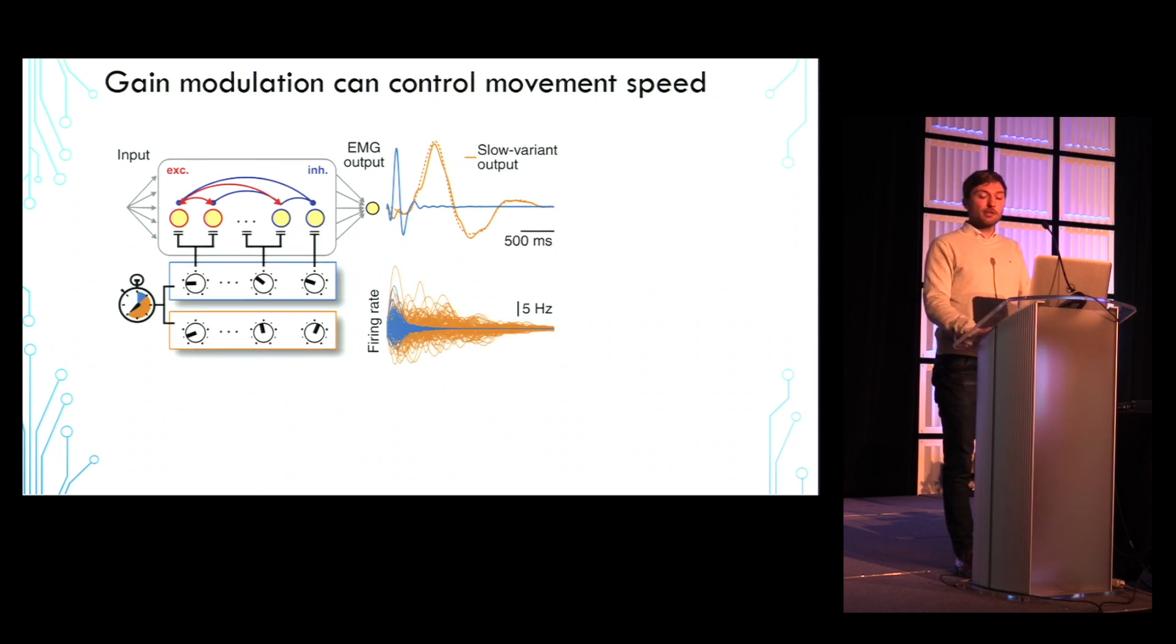Therefore, the temporal scale of the transient neuronal activity can also be extended several-fold through specific changes in the neuronal gains.